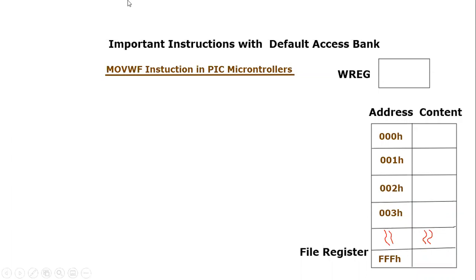Today we are going to talk about an important instruction of the PIC 18F microcontroller, and that is basically MOVWF — Move Working File. So first of all, let's see what is its mnemonic, or the keyword that we are going to write, which is Move Working File.